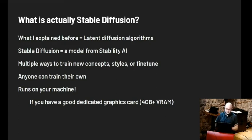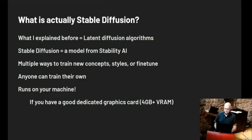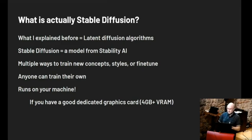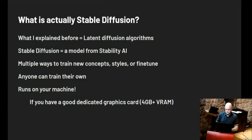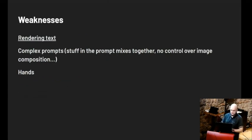It's very generic and understands a lot of things, so people have trained models that perform better in specific tasks — like photorealistic portraits, cartoon style, or other things. It also runs on your own machine if you have the hardware, which is usually a dedicated graphics card with at least four gigabytes of video RAM, ideally Nvidia.